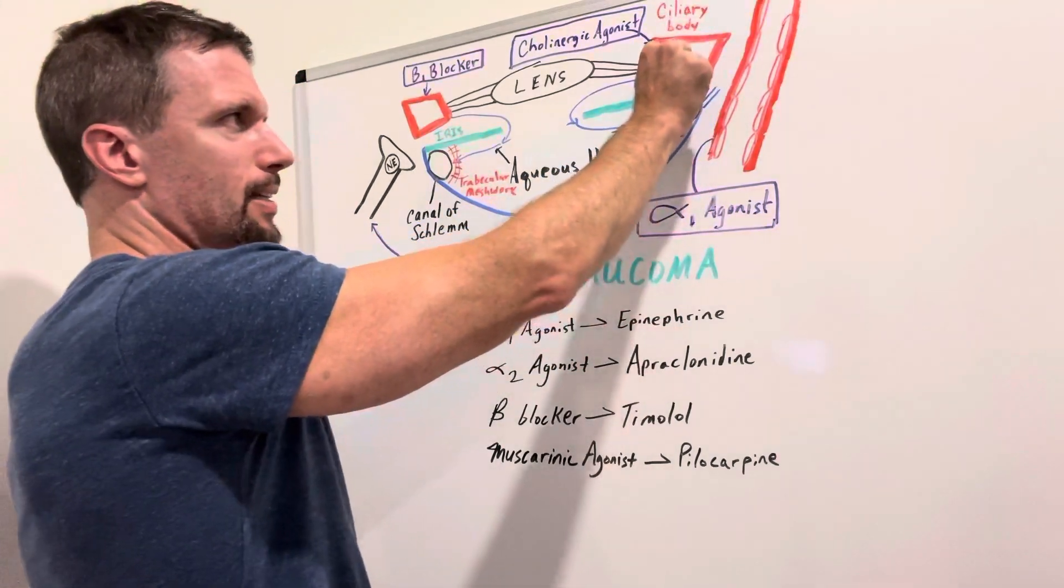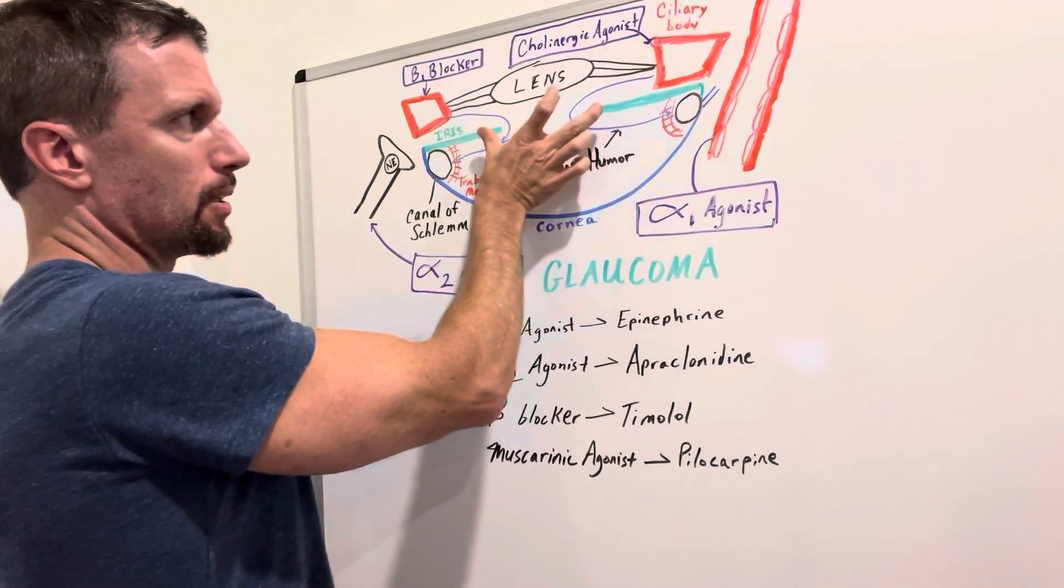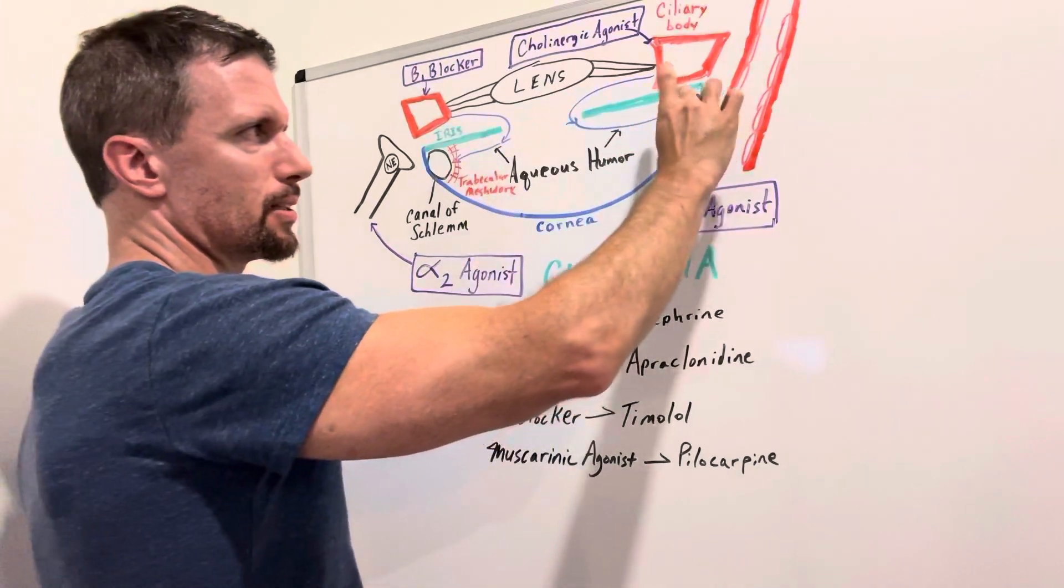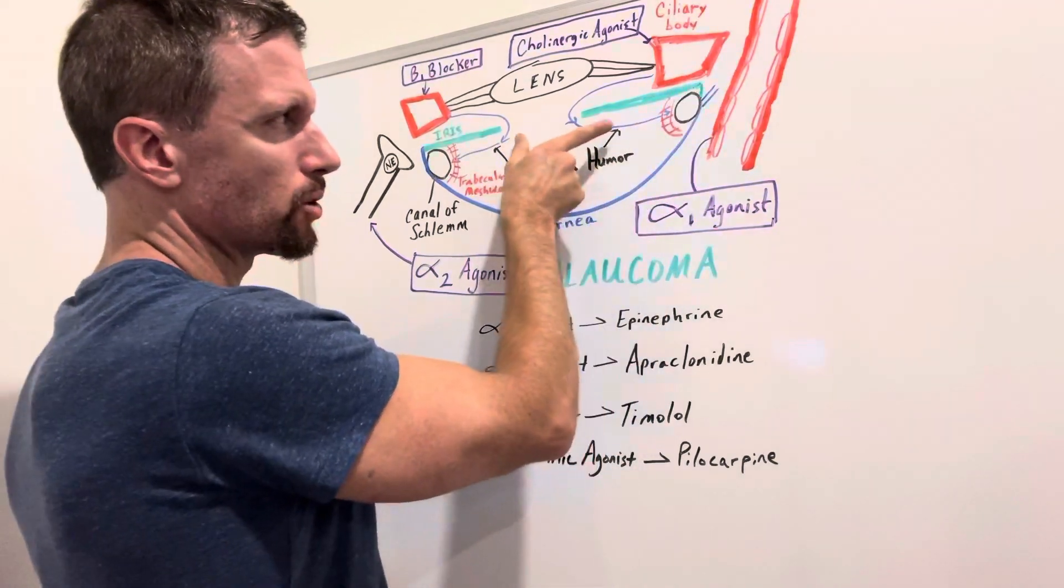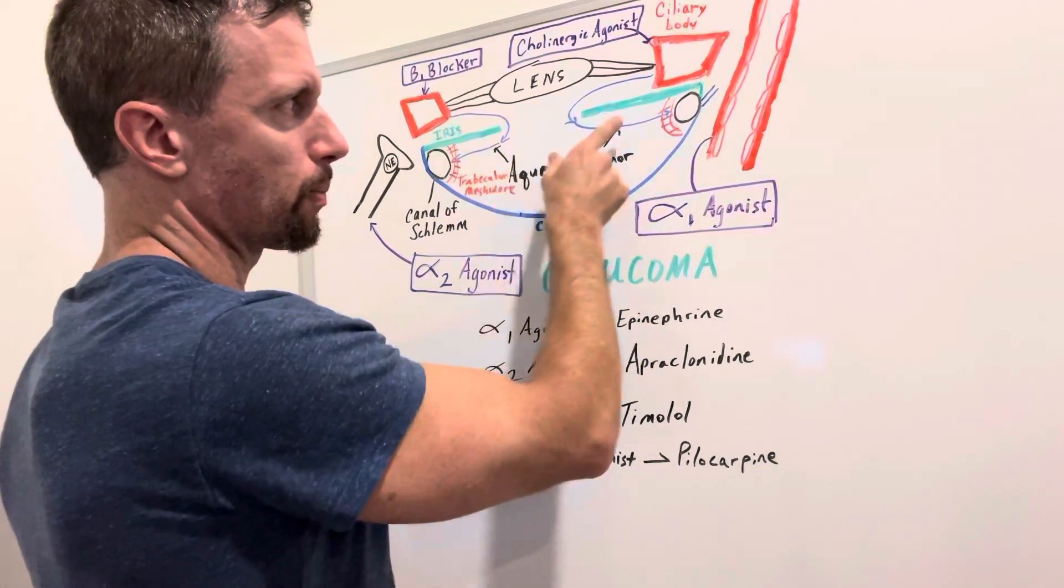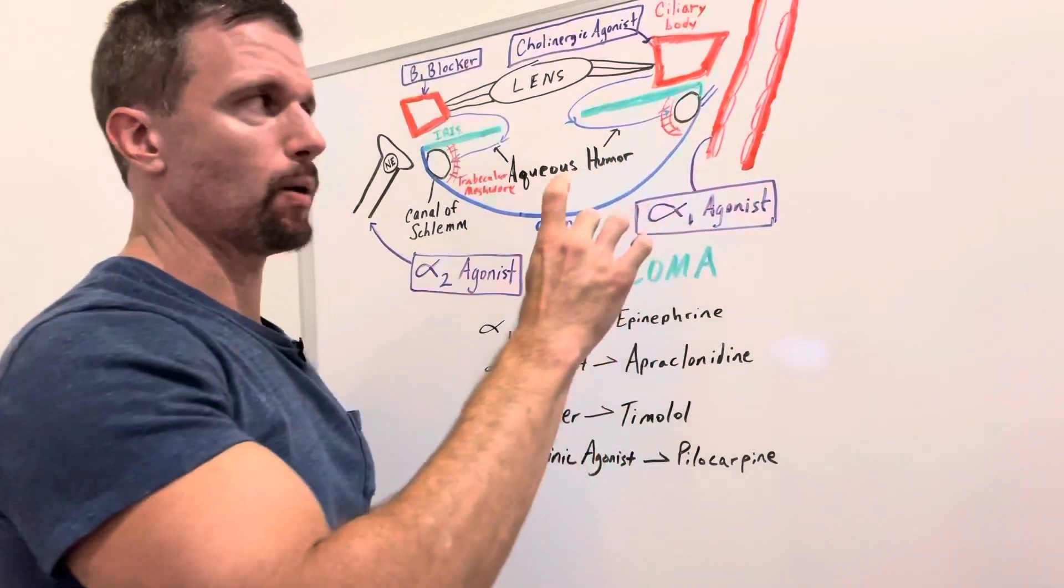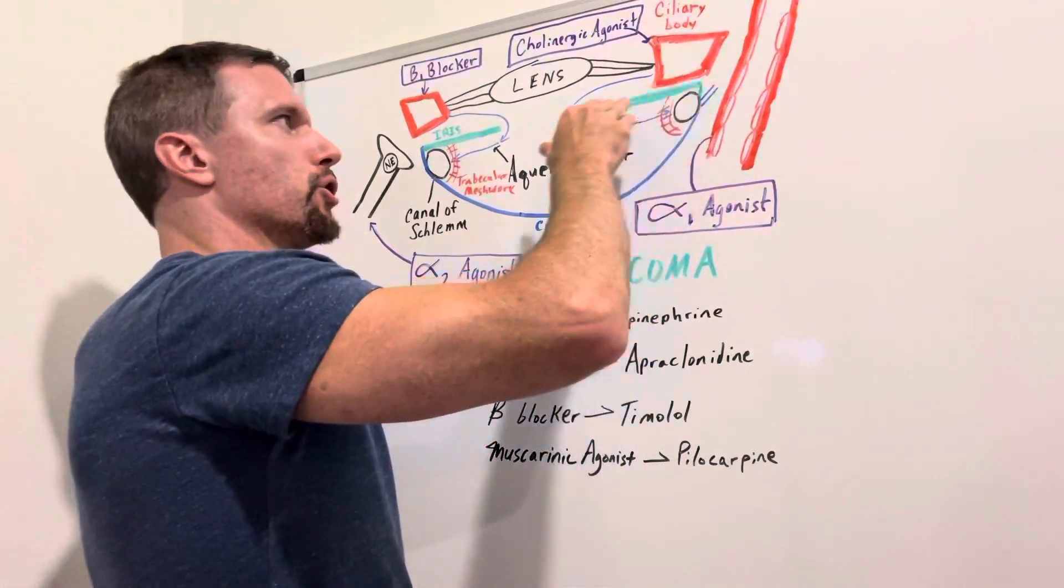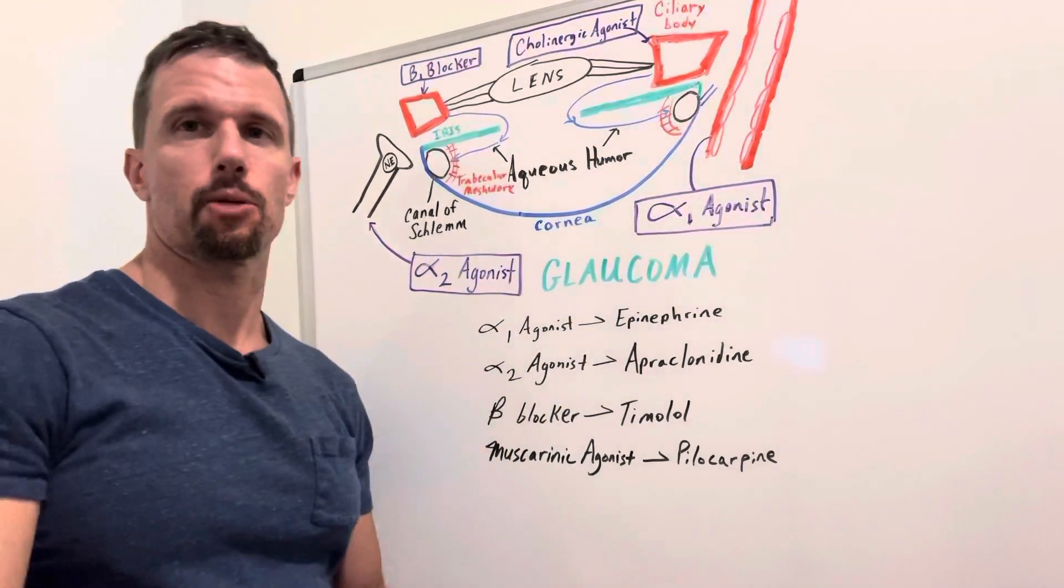When this contracts, this will also contract the iris a little bit. And when you do this, it kind of opens this angle even more and you get some channels in that trabecular meshwork that open up as well as the canal of Schlem opens up a little bit wider. So you can get better drainage with those muscarinic agonists such as pilocarpine.